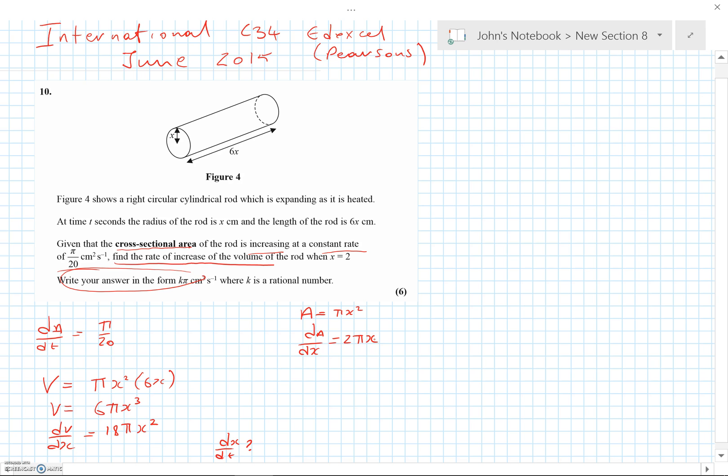So we've got dA/dx is equal to 2πx. We want to work out dx/dt. dx/dt is equal to dx/dA times dA/dt. Now dx/dA is just the reciprocal of this—it's kind of a chain rule as well. That's 1 over 2πx. And dA/dt we're given here, we're told that's π over 20.